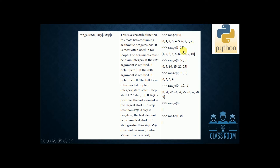range(1, 11) gives start 1 to stop 10 — 11 is not included. range(0, 30, 5): start 0, stop 30, step 5 — common difference is 5, increasing by 5. Another example: range(0, 10, 3) — start 0, end limit 10, step 3, giving 0, 3, 6...